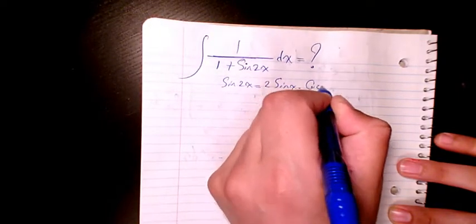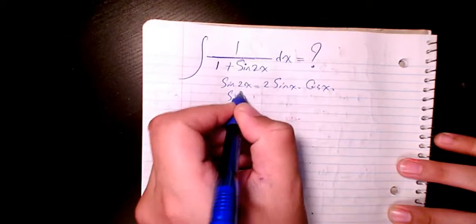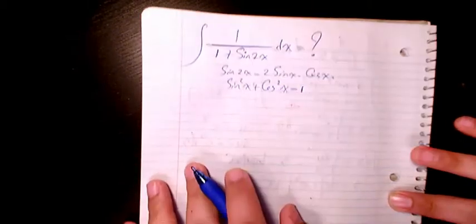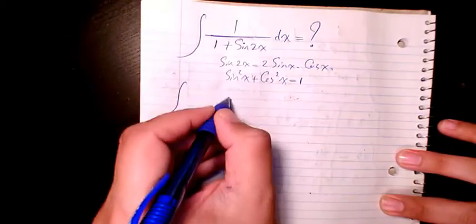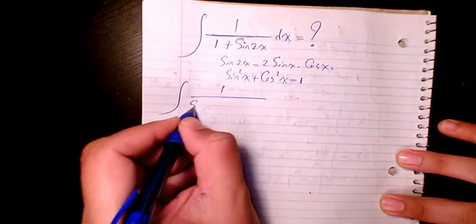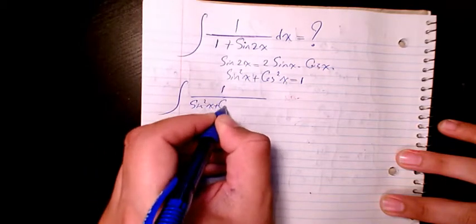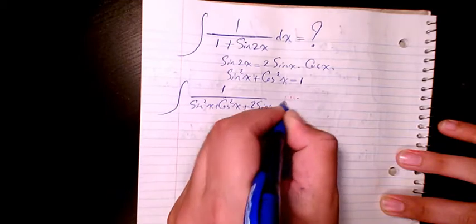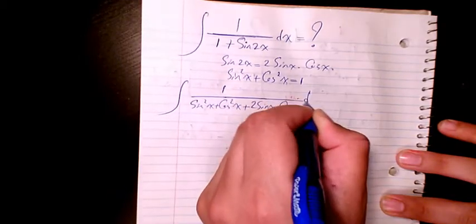And you know sine squared x plus cosine squared x is always equal to 1. So I change this to 1 over sine squared x plus cosine squared x plus 2 sine x cosine x dx.